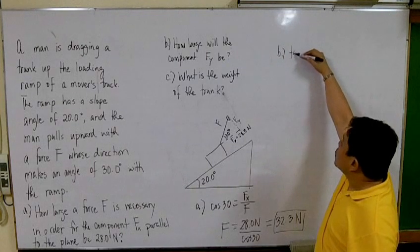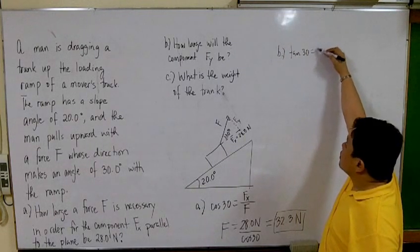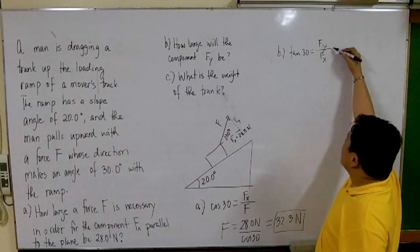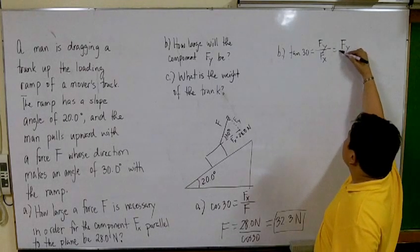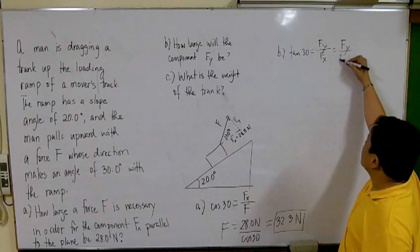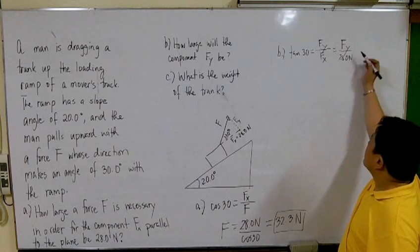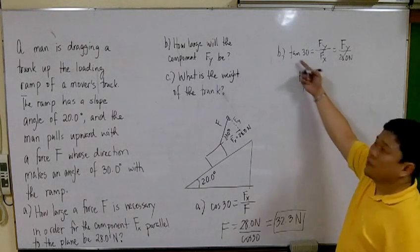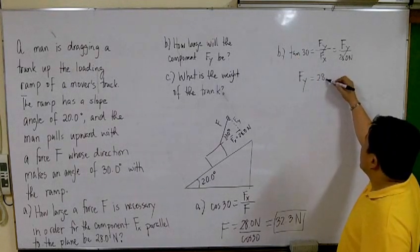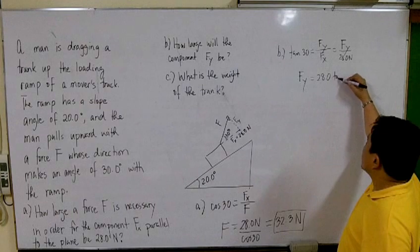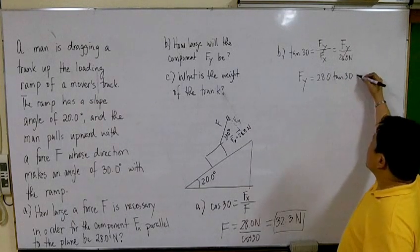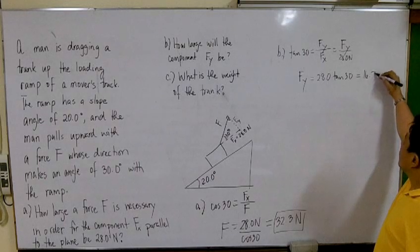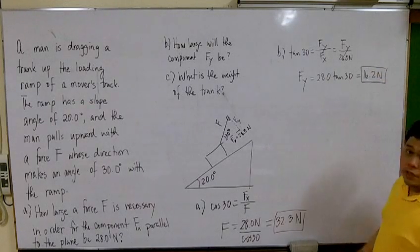We can use tangent 30 equals F_y over F_x. In this case, our F_x is equal to 28.0 newtons. So solving for F_y, we just move this to the other side of the equation, you get 28 times tangent 30. This will give us 16.2 newtons, three significant figures.